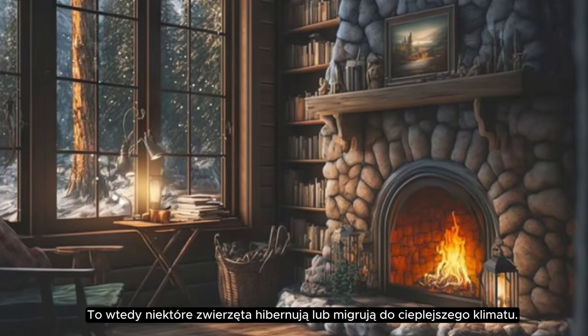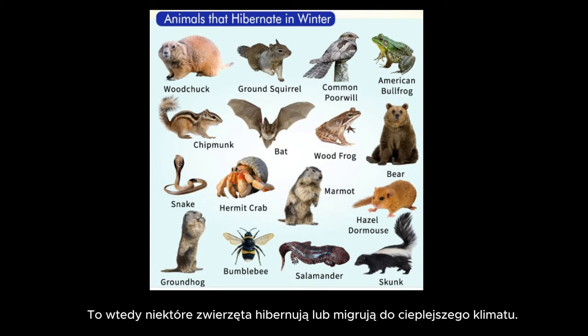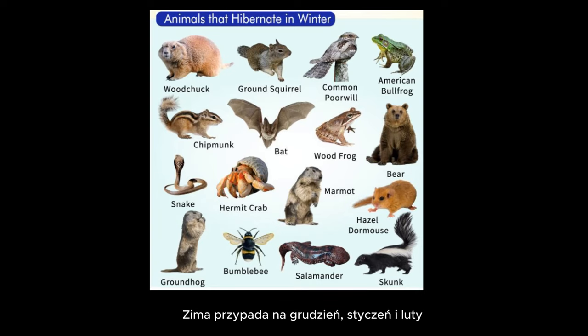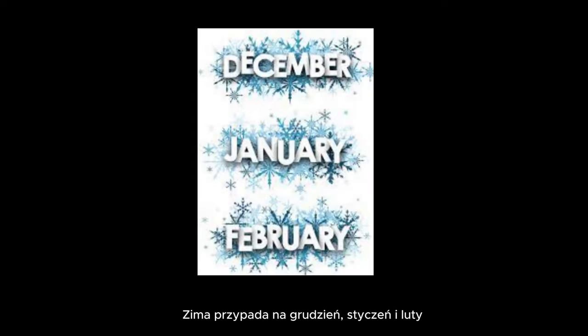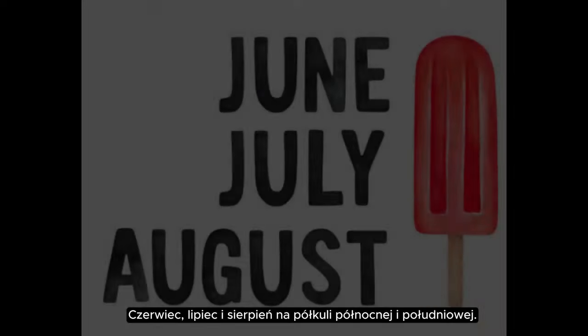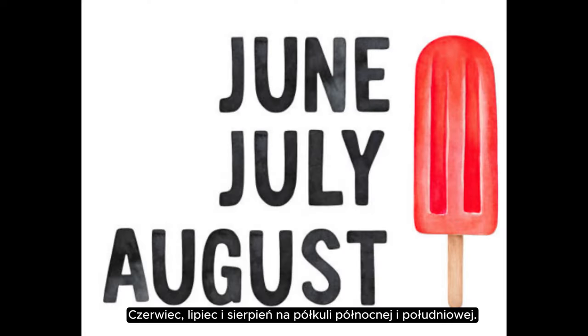It's a time when some animals hibernate or migrate to warmer climates. Winter occurs during December, January, and February in the Northern Hemisphere, and June, July, and August in the Southern Hemisphere.